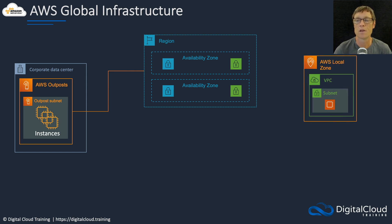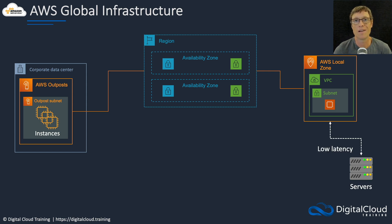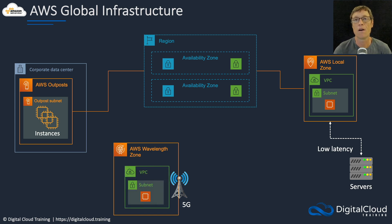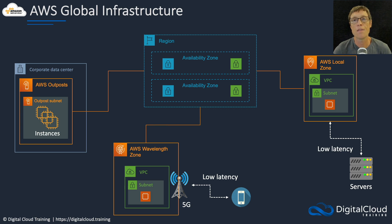We also have local zones. Local zones help you get AWS services closer to your end users, giving you lower latency — less delay over the network — because they're closer than the region might be to where your users actually are. We also have something called a wavelength zone. This is also about getting your services to your end users, but in this case via a 5G network, so users can connect with low latency over 5G to services running in the wavelength zone. And those are all connected to your AWS region as well.